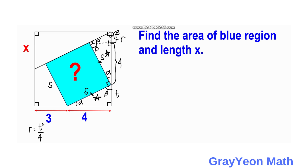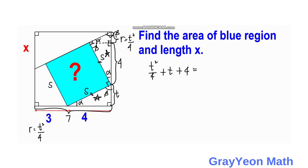Next, we make an equation about the vertical segment of this square. Taking the total length, we have t squared over 4 plus t plus 4, and this is equal to the total side length of the white square, which is 7.